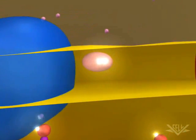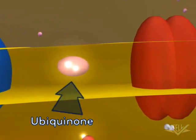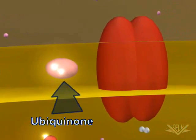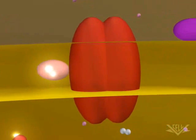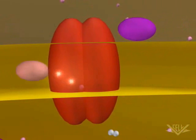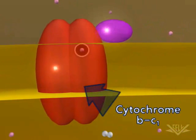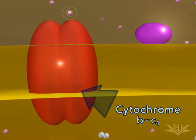Next, the two electrons are transferred to ubiquinone. Ubiquinone is called a mobile transfer molecule because it moves the electrons to the cytochrome BC1 complex.